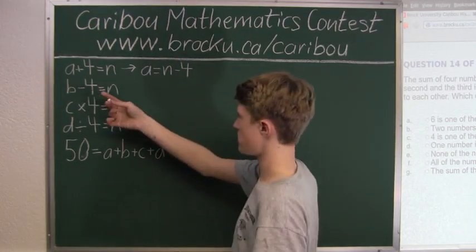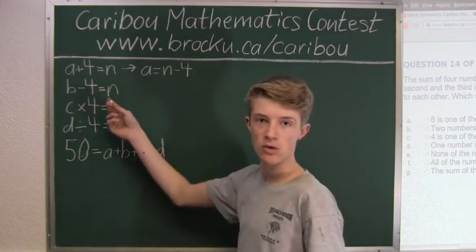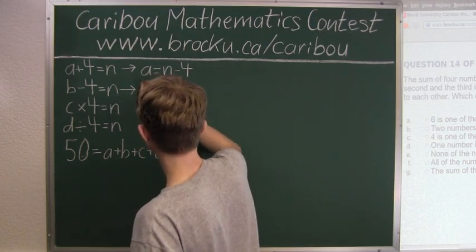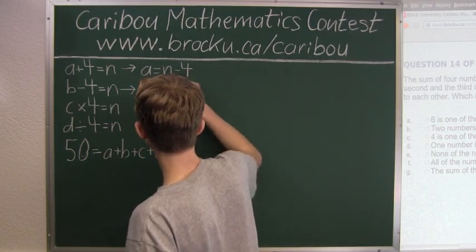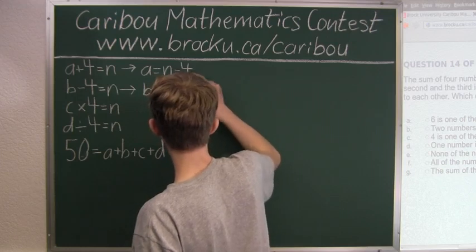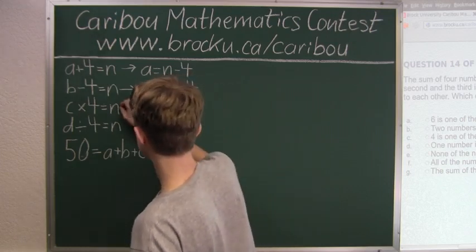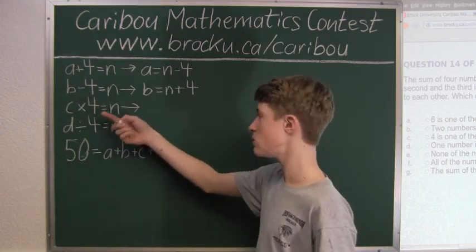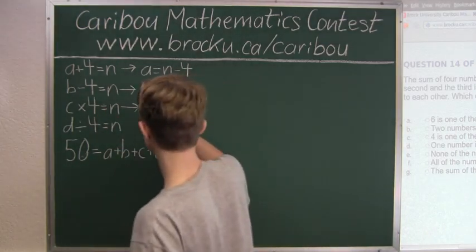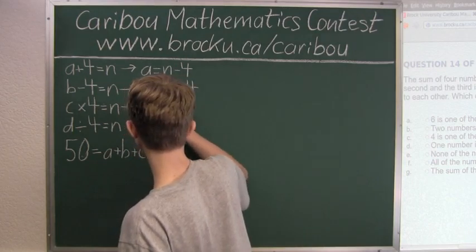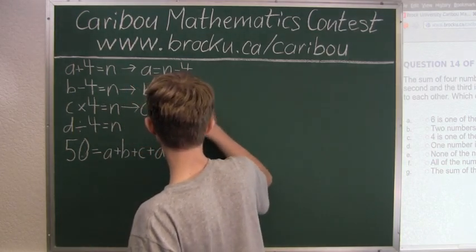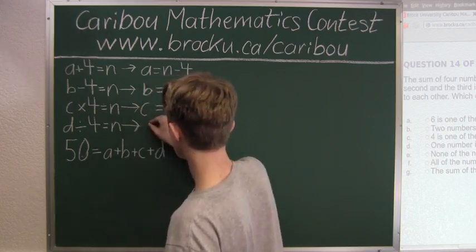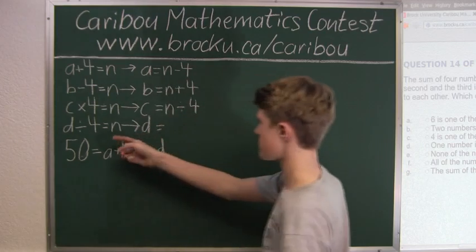And this could also be written as B equals N plus four. And this can be written as C equals N divided by four. And this can be written as D equals N times four.